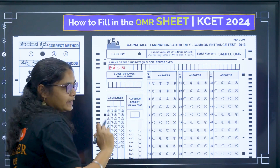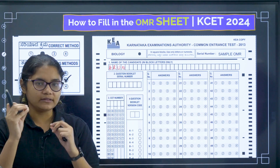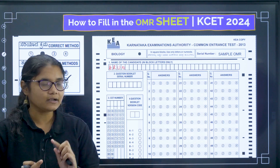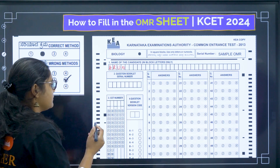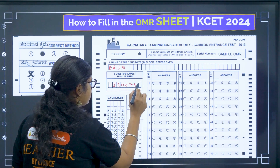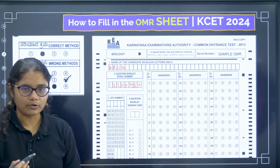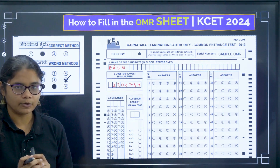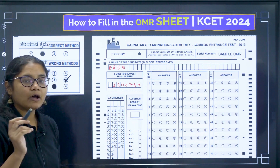The second segment is the question booklet serial number. Your question paper will have a question booklet serial number, and you have to write that number in this segment. For example, if the number is 1230784, just write it down correctly in the question booklet serial number box.